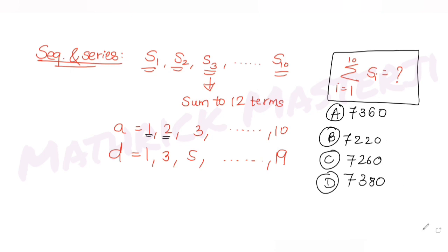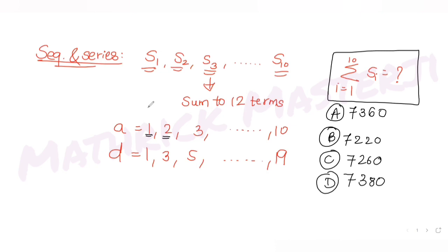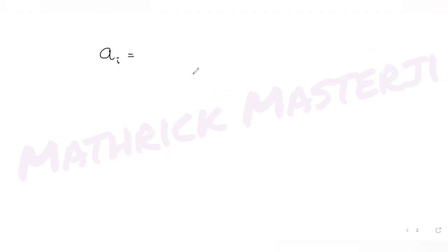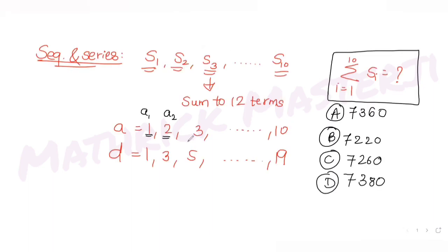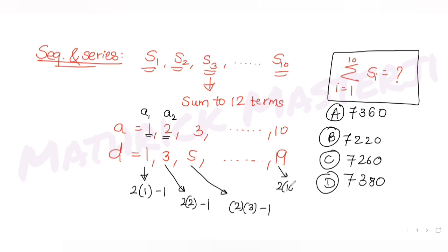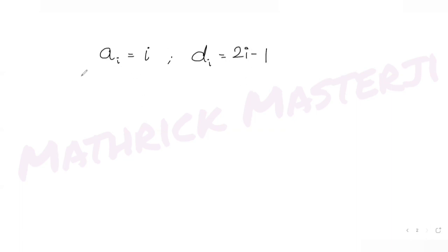The first term of each arithmetic progression, a_i, equals i. For the common differences — 1, 3, 5 till 19 — I can write the i-th one as 2i − 1. For example: 2(1)−1 = 1, 2(2)−1 = 3, 2(3)−1 = 5, and so on up to 2(10)−1 = 19.